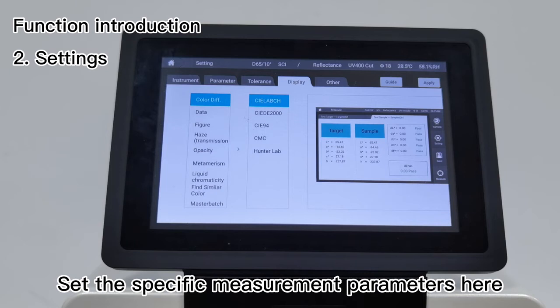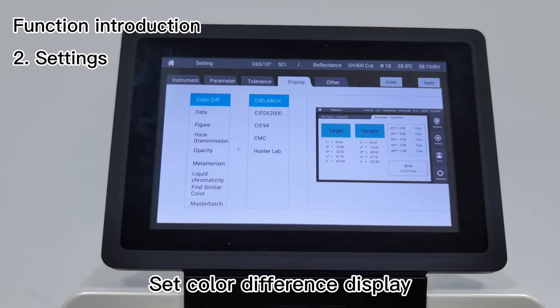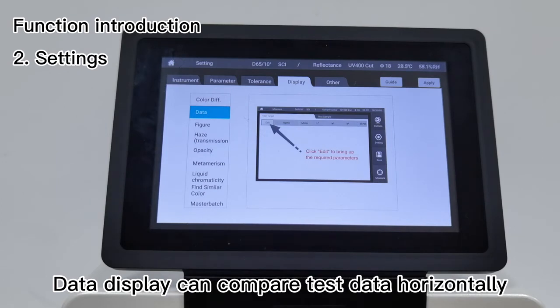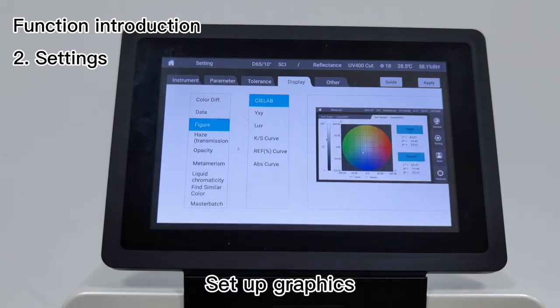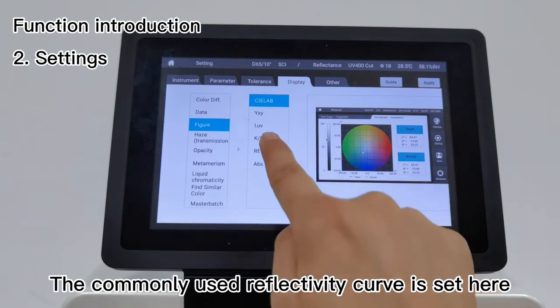Display settings allow you to set the specific measurement parameters here. Set color difference display data, display and compare test data horizontally, and set up graphics.